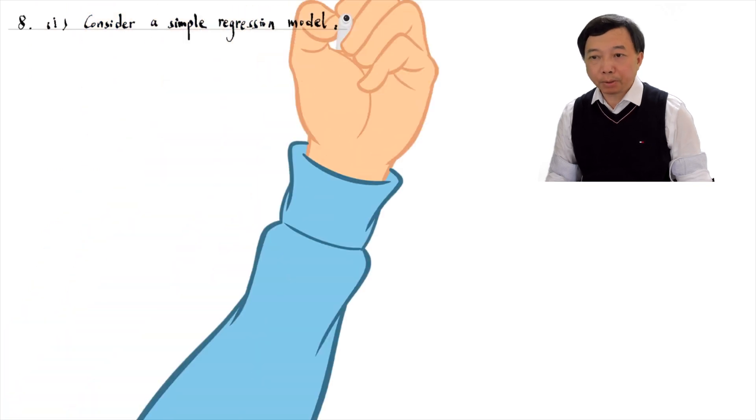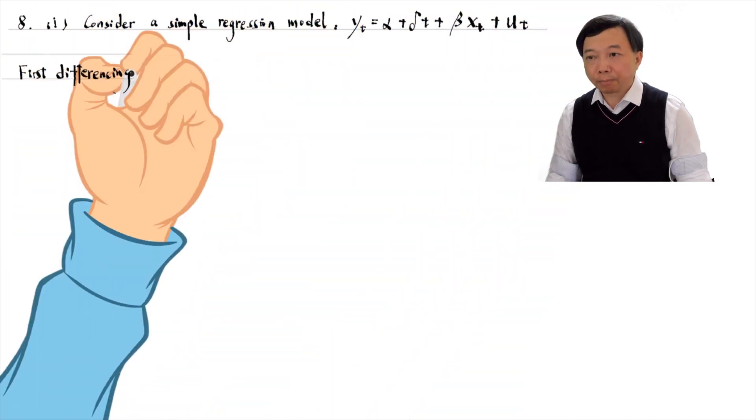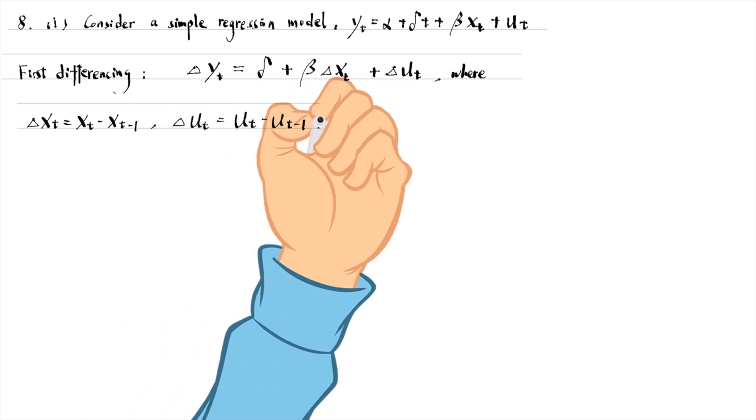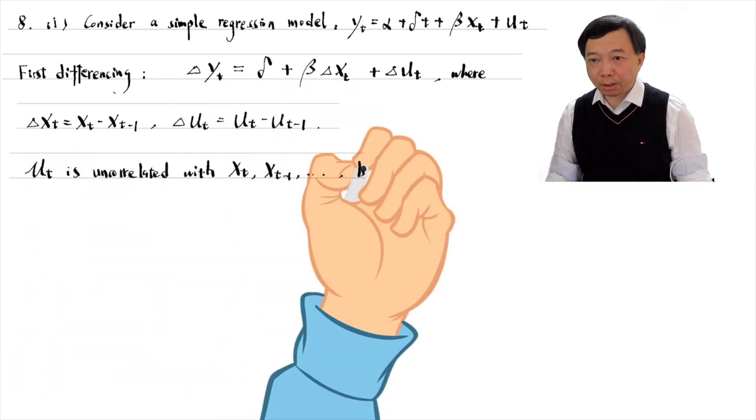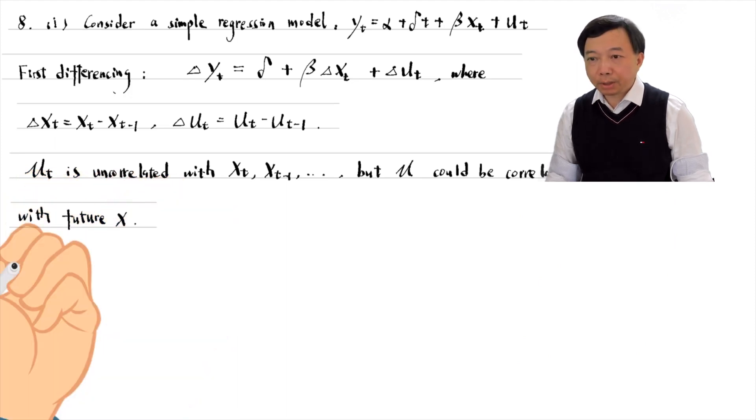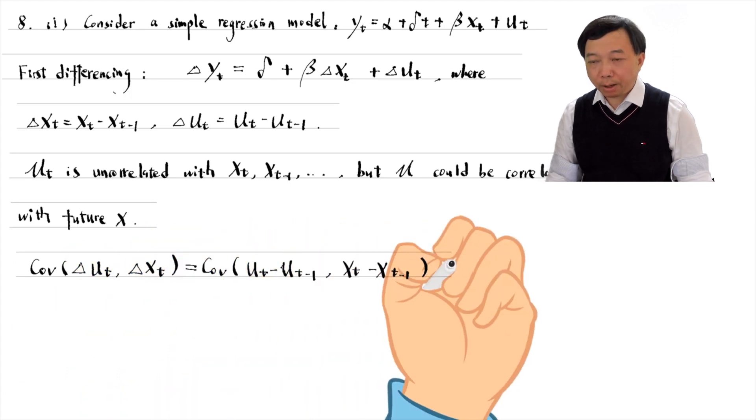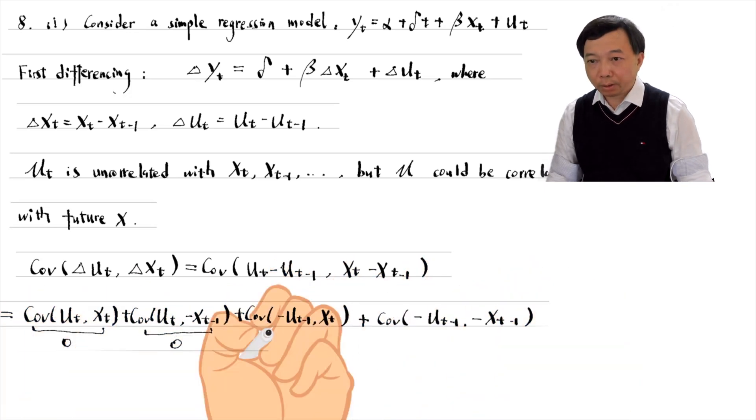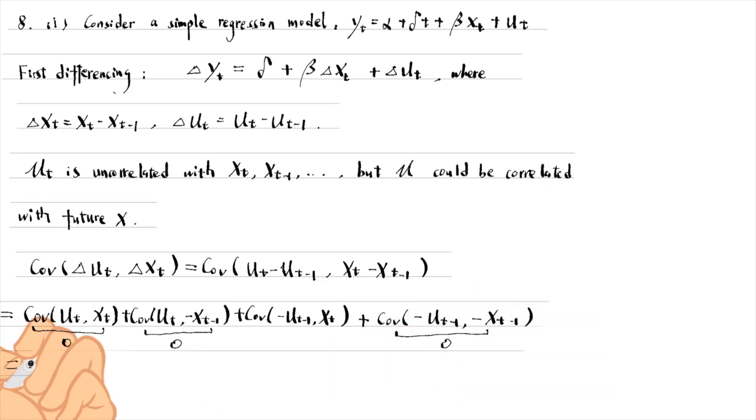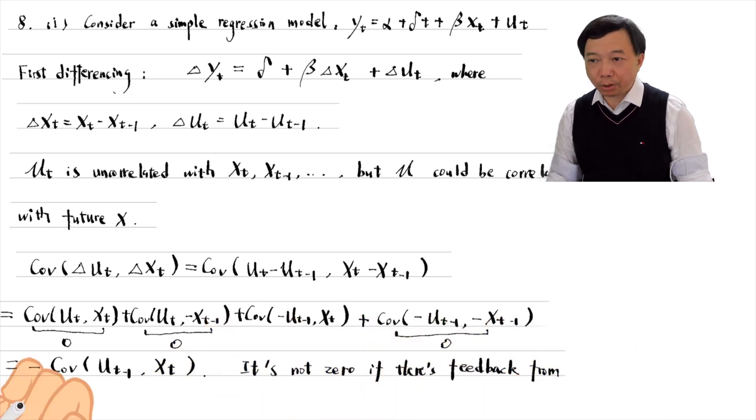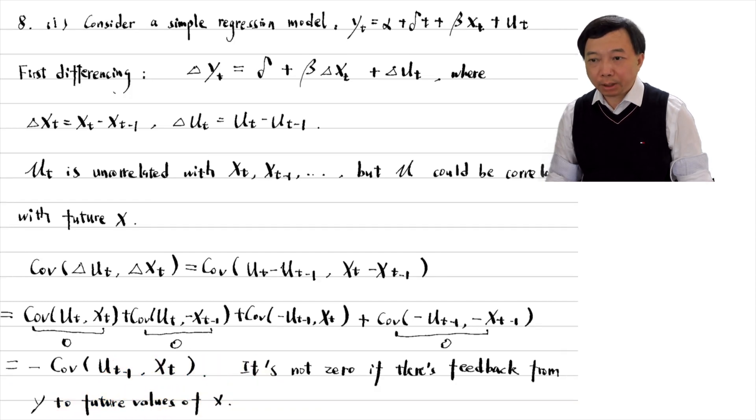We can consider the simplest case with a single x_t. The first differencing gives this equation. Mu_t is uncorrelated with x_t, x_{t-1}, etc. But mu could be correlated with future x. We can show that the covariance between delta mu_t and delta x_t equals minus covariance between mu_{t-1} and x_t. If there is feedback from y to future values of x, the covariance does not equal 0.